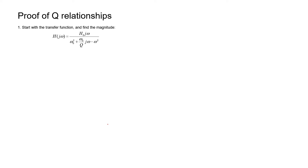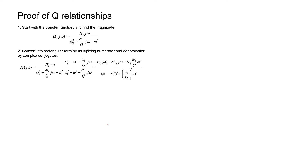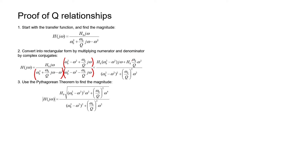Let's take a look at a general transfer function representing a bandpass filter. Keep in mind that a number of different arrangements of circuit elements could give exactly this transfer function. Notice that Q appears in its position in the denominator. For this analysis, I'm going to be using j-omega instead of s. I'm going to convert this transfer function into rectangular form by multiplying the numerator and denominator by the complex conjugate of the denominator. In the denominator I have a plus omega-naught over Q times j-omega term, so I multiply both numerator and denominator by the denominator with that sign changed.